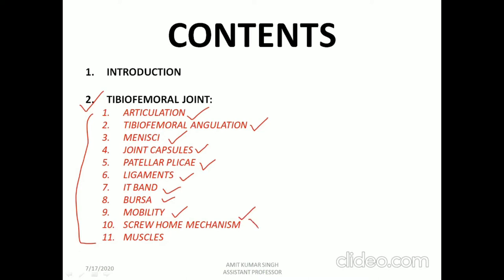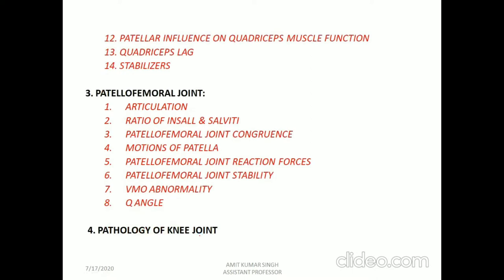The screw home mechanism is an important topic that comes in university papers for 5 or 10 marks depending on the type of question. It is also known as locking and unlocking of the knee joint. Then we will discuss the important muscles surrounding the knee complex, and how the patella influences quadriceps muscle function, what is quadriceps lag, and the stabilizers.